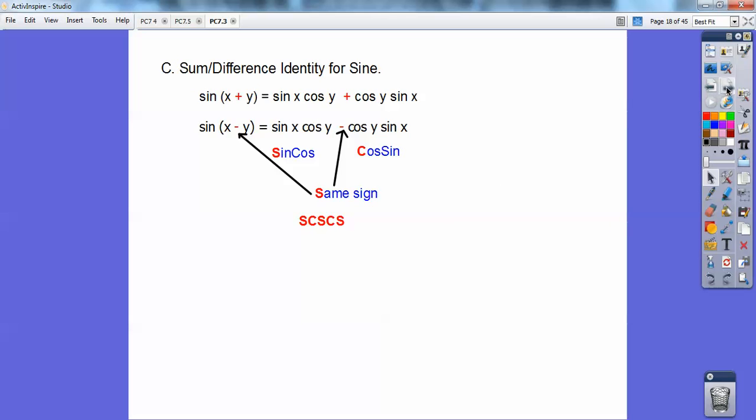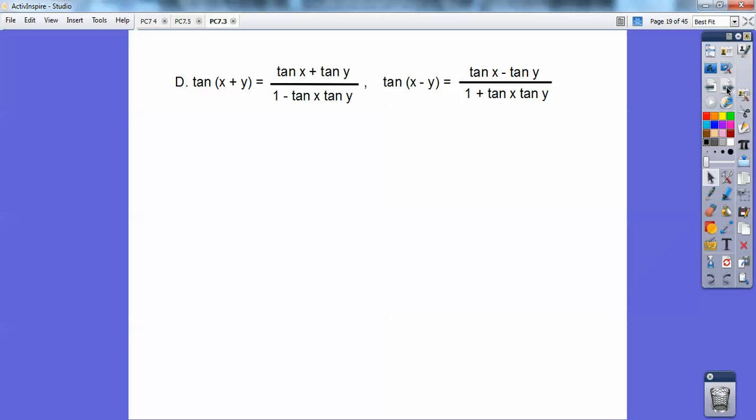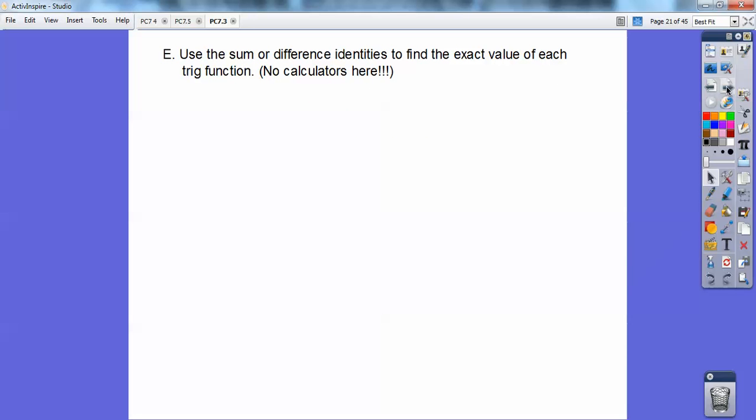These ones I don't have a gimmick for, I wish I did. Tangent of x plus y is tan x plus tan y over 1 minus tan x tan y. And then tan of x minus y is tan x minus tan y over 1 plus tan x tan y. I tell my students if you can give me a nice gimmick, one that makes it easy to remember, I'll give them some extra credit. I haven't gotten anything yet. I'd appreciate it if I could get something from you guys, just email me at jbullock at sanjuan.edu.